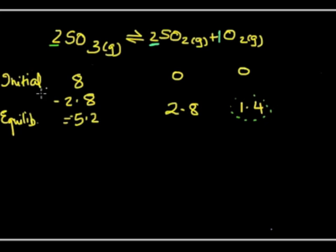So at equilibrium, we have 5.2 moles of sulfur trioxide, 2.8 moles of sulfur dioxide and 1.4 moles of oxygen. Once we have done this, we need to find the concentration because Kc works in terms of concentration.